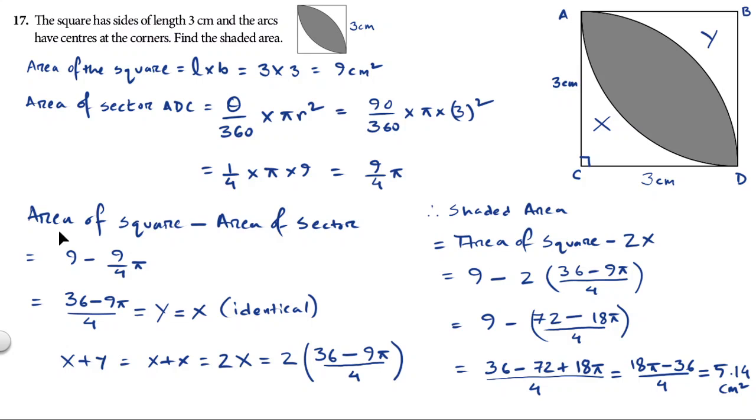Now if I take away area of the sector from the area of the square - the area of the square is the whole thing. And if I take away the area of the sector which I just found, 9 by 4 pi, if I take away this sector from the square, then I'll get Y, the value for Y.